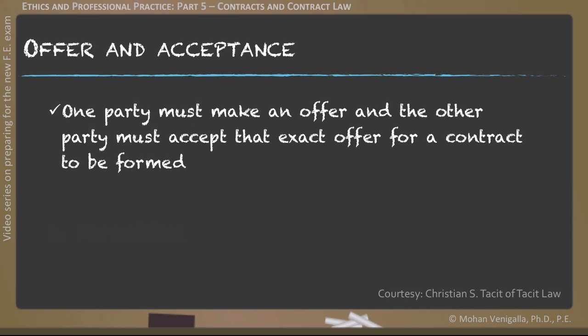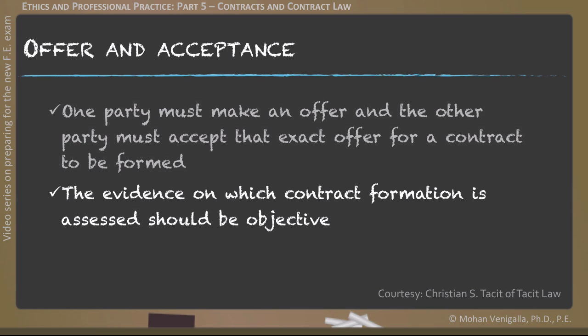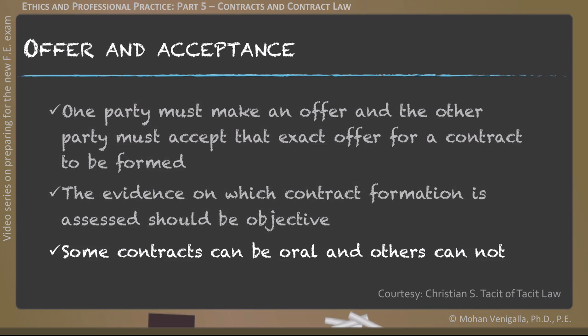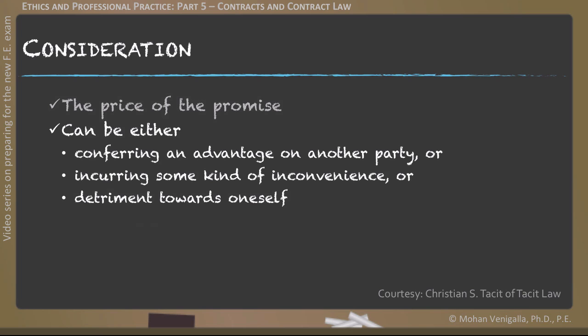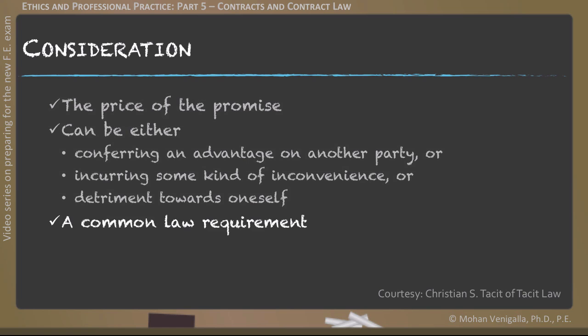Let's first talk about offer and acceptance. In order for a contract to be formed, one party must make an offer and the other party must accept the exact same offer. The evidence on which contract formation is assessed should be objective. Most contracts are written, but some contracts can be oral contracts as well and they are enforceable. The primary consideration in a contract is the price of the promise, meaning both parties to a contract must bring something to the bargain.